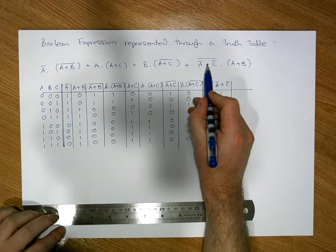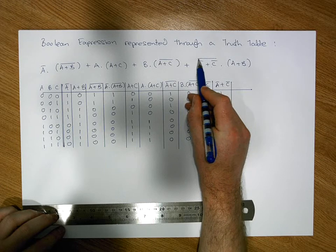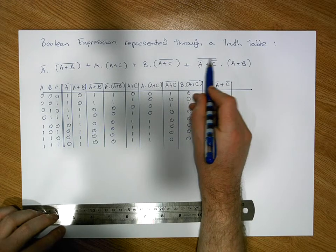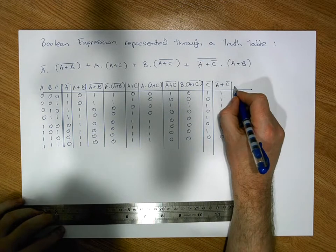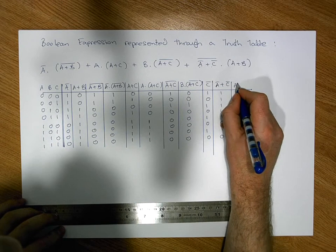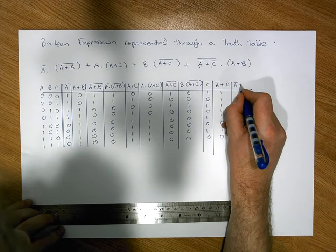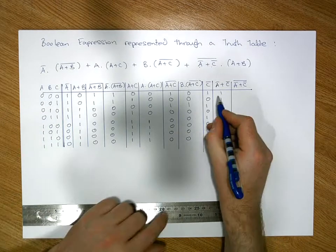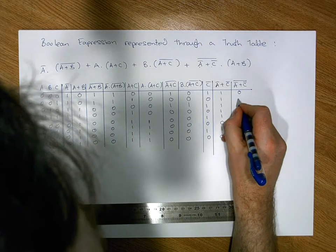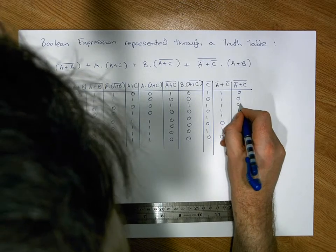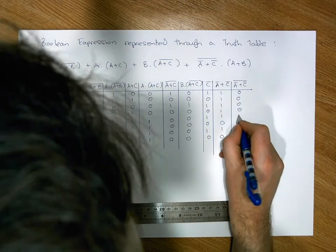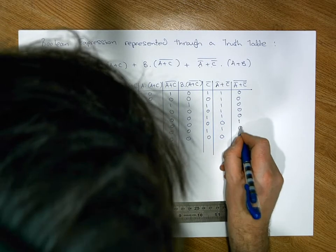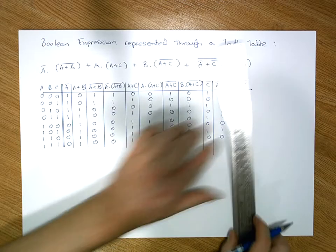We've now computed what's inside the negation — A-bar OR C-bar — so we can negate it. Flipping ones to zeros and zeros to ones, we get: zero, zero, zero, zero, zero, one, zero, one. That is our (A-bar OR C-bar)-bar column.